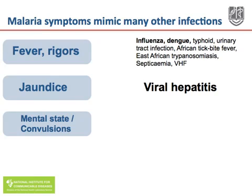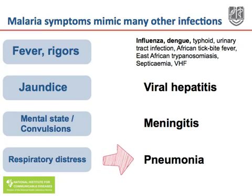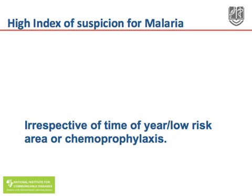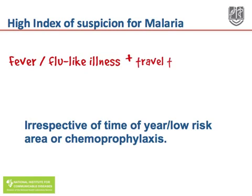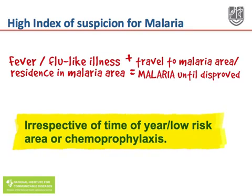Change in mental state and convulsions may be confused with meningitis, encephalitis, or cerebral malaria. Patients with respiratory distress may be misdiagnosed as pneumonia, whereas the respiratory distress may in fact be a complication of malaria. So it is critically important that there is a high index of suspicion for malaria in anybody who has fever, flu-like illness, plus a travel to a malaria area or residence in a malaria area — and in these patients it is malaria until disproved, irrespective of the time of year, visit to or residence in a low-risk area, or if prophylaxis has been taken.